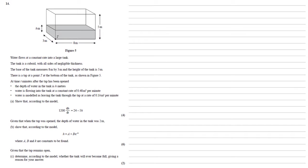For part A, we need to show that according to the model, 1200 times dh by dt equals 24 minus 5h. As we've been told the rate at which the water is flowing into the tank and the rate at which it's flowing out of the tank, we can calculate dv by dt, the change in volume per time, by using these values. So dv by dt is going to equal the 0.48 for the water coming in, minus the 0.1h for the water coming out.